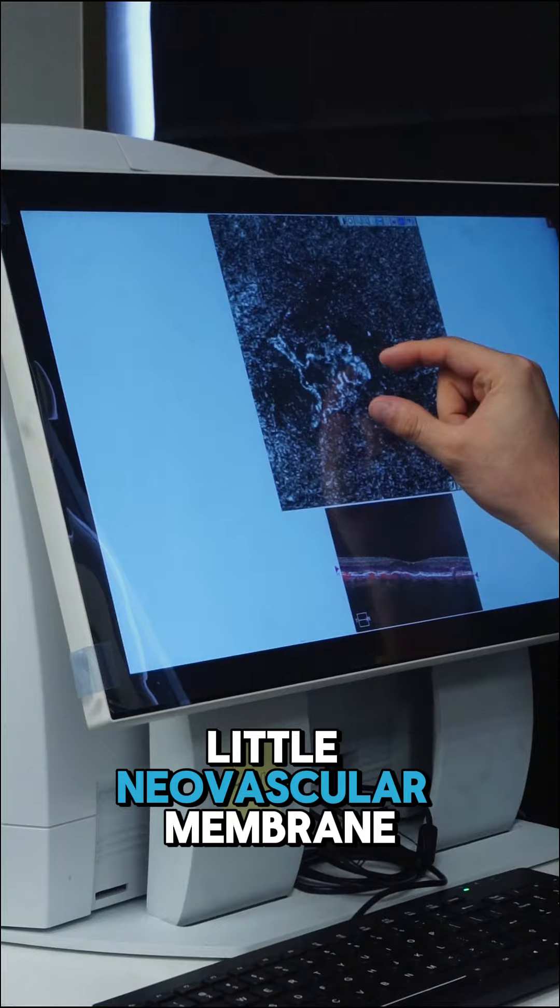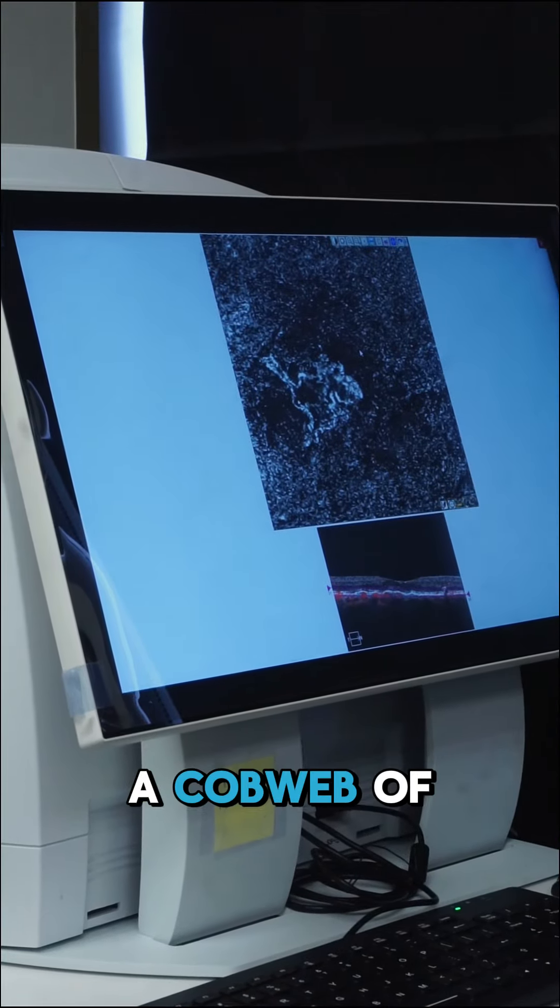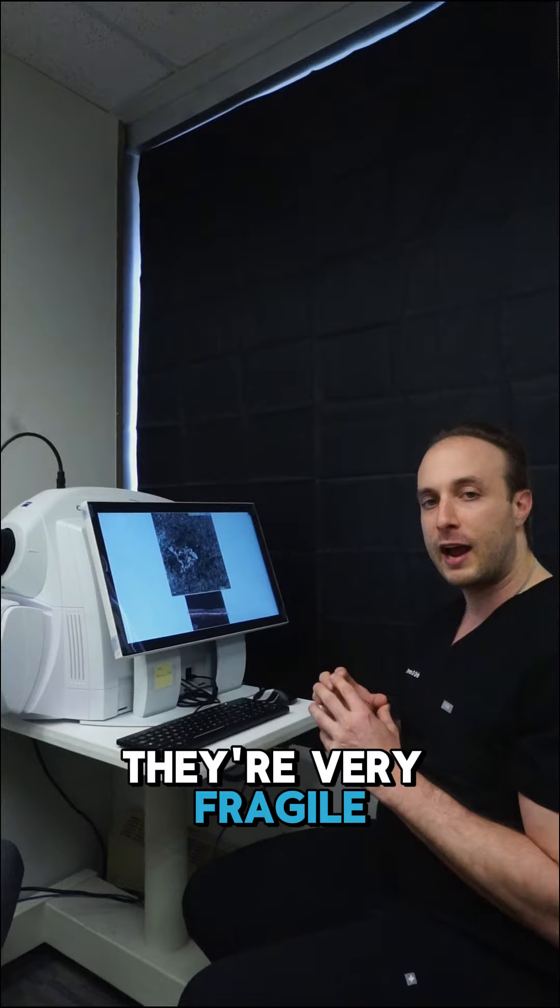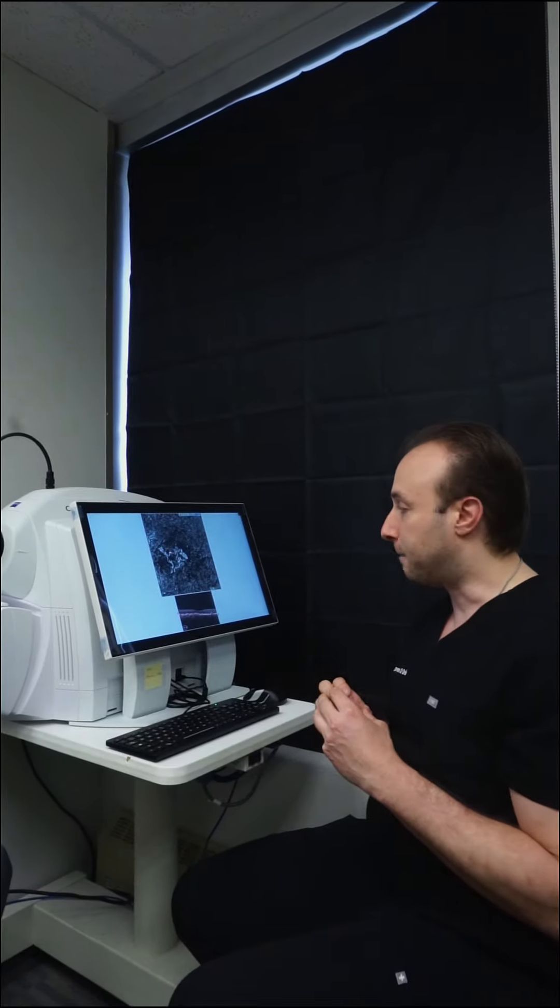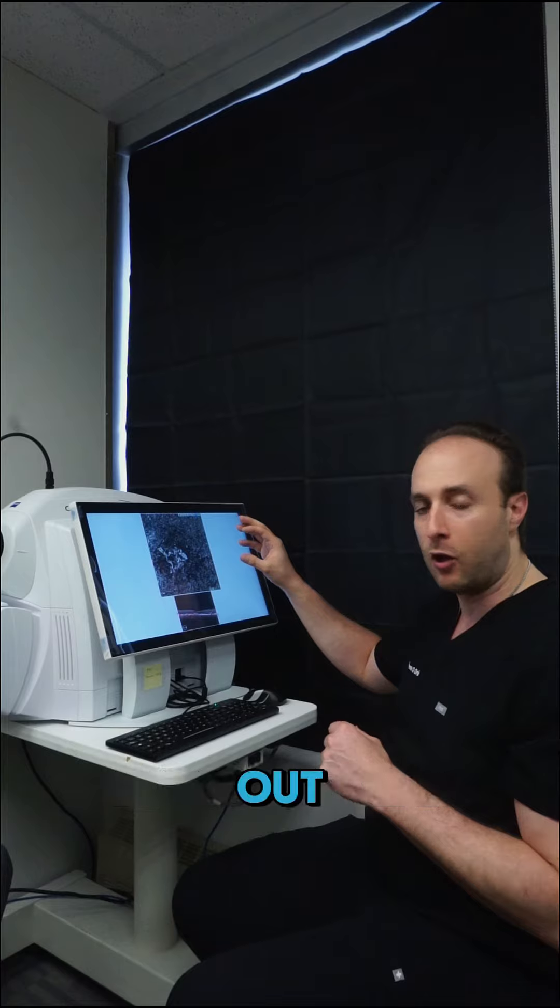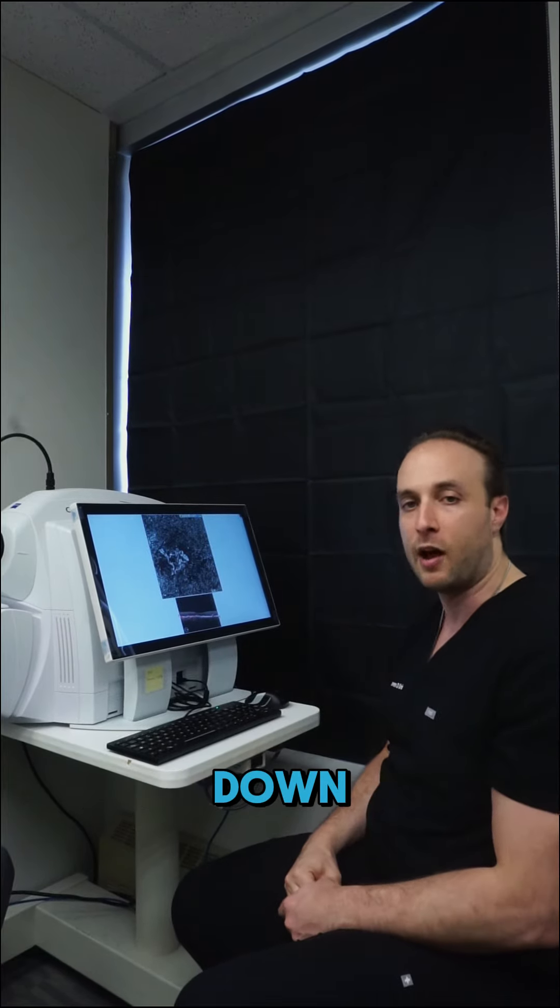Here's a little neovascular membrane. Think of it as like a cobweb of blood vessels. They're very weak, they're very fragile, and they can rupture at any moment and cause blood to leak out, which will cause vision to go down.